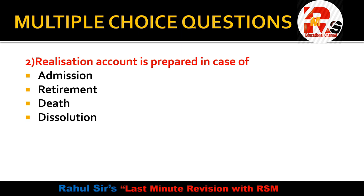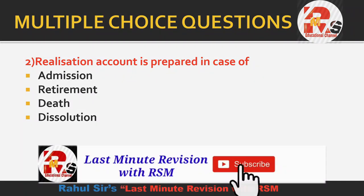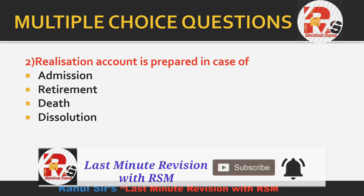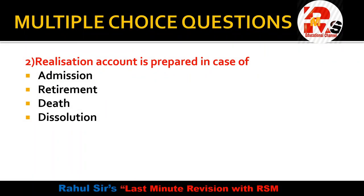Realization account is prepared in case of admission, retirement, death, or dissolution. Dissolution means the company is closed — winding up of the company. When you close the company, you settle your assets and liabilities. The correct answer is dissolution of the firm.